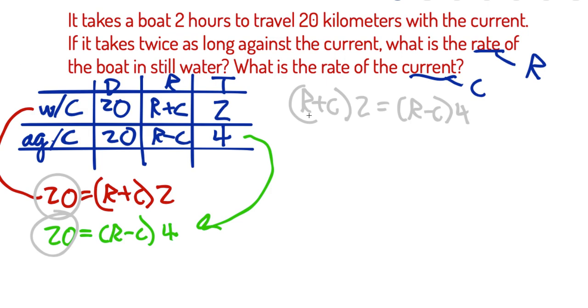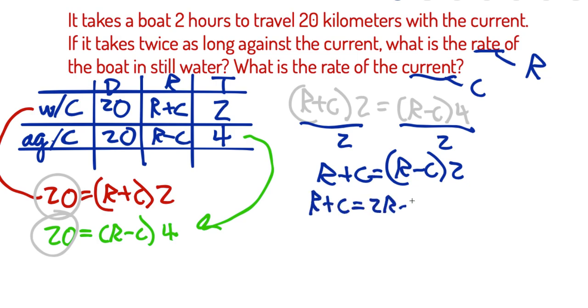Now, other observant ones are saying, hey, let's not distribute these numbers because both of these numbers, the two and the four are divisible by two. And I'm thinking grand idea. Let's do that. So we've got R plus C equals R minus C times two. And I'm going to distribute that two on the right hand side. So we get R plus C equals two R minus two C.